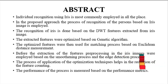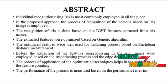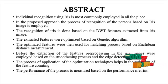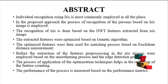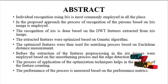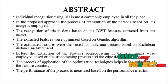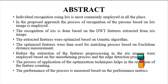Now we discuss the abstract. Individual recognition using iris is most commonly employed in all places. In the proposed approach, recognition of persons based on iris image is employed. Recognition is done based on DWT feature extraction from the iris image. The extracted features are optimized by a genetic algorithm — GA is applied only when optimization is necessary. The optimized features then undergo the matching process based on equilibrium distance measurements, and SVM is applied to classify whether the person is authenticated or not.